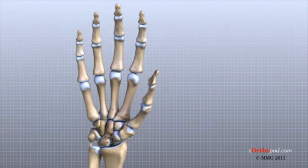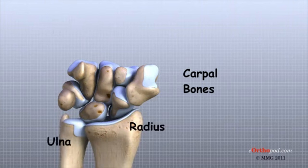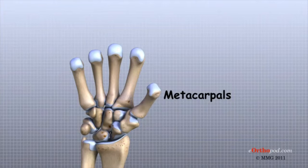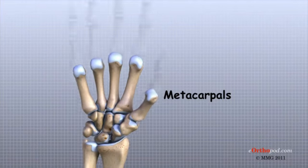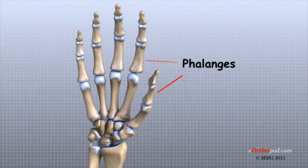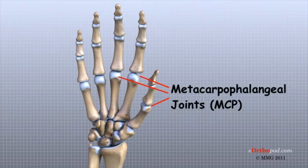There are 27 bones within the wrist and hand. The wrist itself contains eight small bones called carpals. The carpals join with the two forearm bones, the radius and ulna, forming the wrist joint. Further into the palm, the carpals connect to the metacarpals. There are five metacarpals forming the palm of the hand, and one metacarpal connects to each finger and thumb. Small bone shafts called phalanges line up to form each finger and thumb. The main knuckle joints are formed by the connections of the phalanges to the metacarpals.